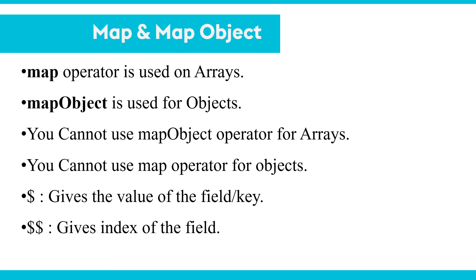Now comes map and mapObject. The map operator is always used to access arrays inside your DataWeave, and mapObject is used for objects. You cannot use mapObject for arrays, and vice versa — you cannot use map for objects. Dollar sign ($) gives the value of a field or the key, and double dollar ($$) gives the index of the field.